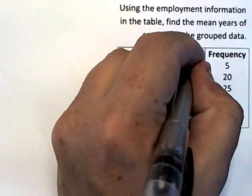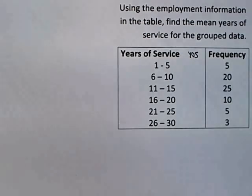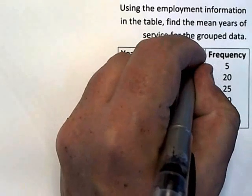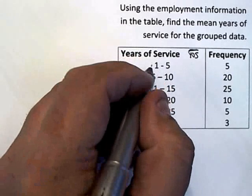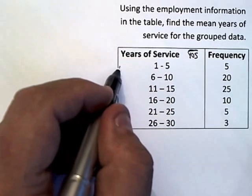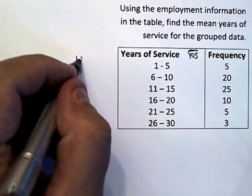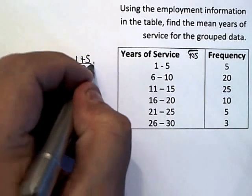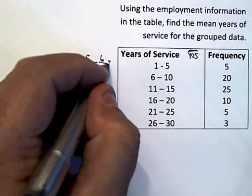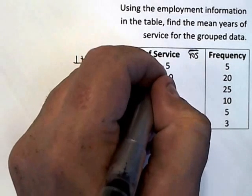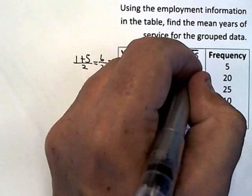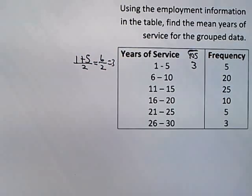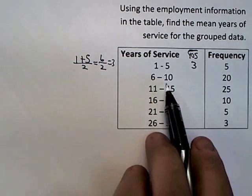I want to take the years of service (YOS) and find the average within each interval. For instance, I take one and five and average them: six divided by two is three. So instead of using the interval one through five, I'm going to assume that all five of those people had three years of service.